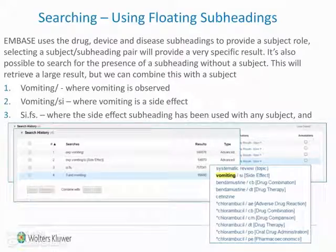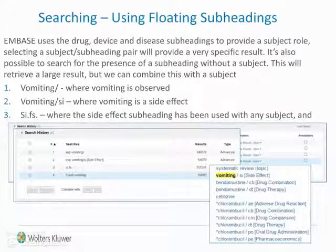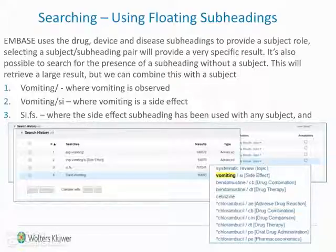Embase uses drug and disease subheadings to provide a role for a subject. Selecting a subject-subheading pair will provide a very specific result, but it is also possible to search for the presence of a subheading independent of any subject. Searching for a subheading on its own will offer a very large result, but we can combine this with another subject to give context to that subject.